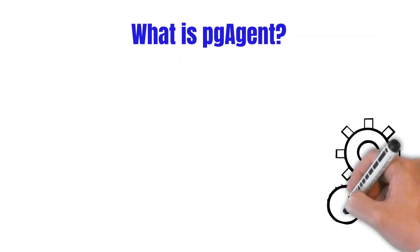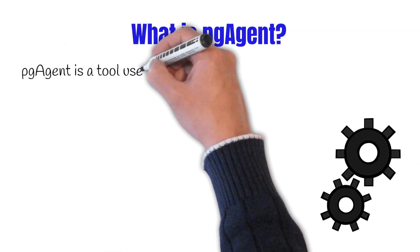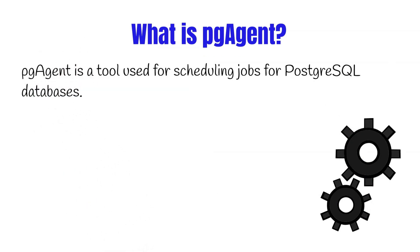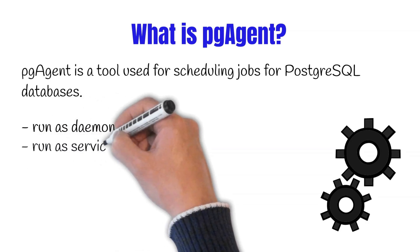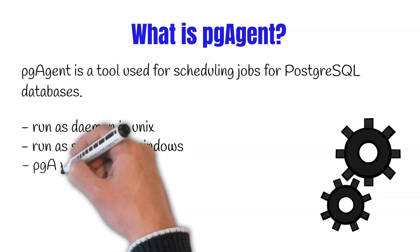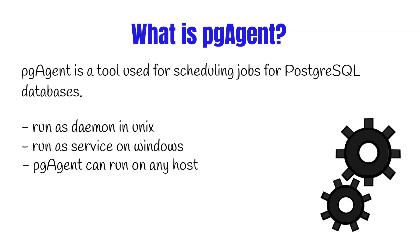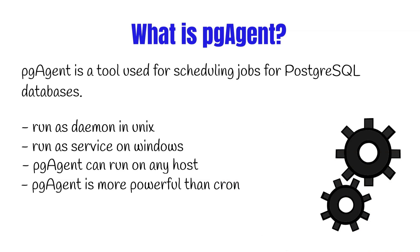Scheduling and automation is a very important aspect of database administration, and to achieve this in Postgres one way you can go about it is using pg-agent. On Unix systems, pg-agent runs as a daemon and on Windows it runs as a service. It has more powerful scheduling capabilities than cron, which is often used, because pg-agent is specifically built for Postgres tasks.